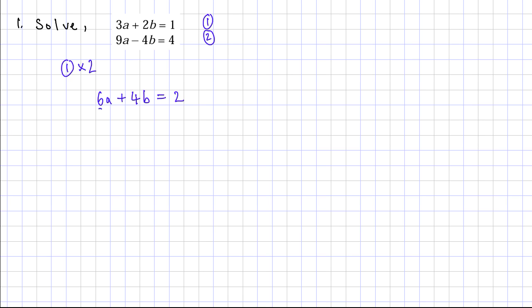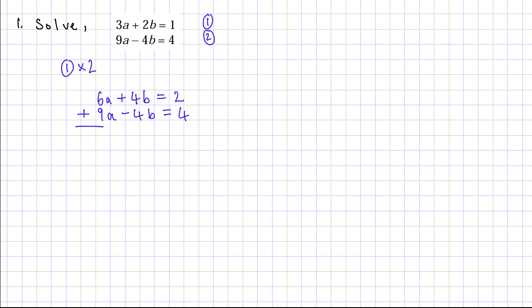I'll write the second equation below: 9a minus 4b equals 4. Now I need to decide whether to add or subtract to cancel the b terms. I can see that 4b plus minus 4b gives 0, so I should add. Adding: 9a plus 6a is 15a, 4b plus minus 4b is 0, and 2 plus 4 is 6.